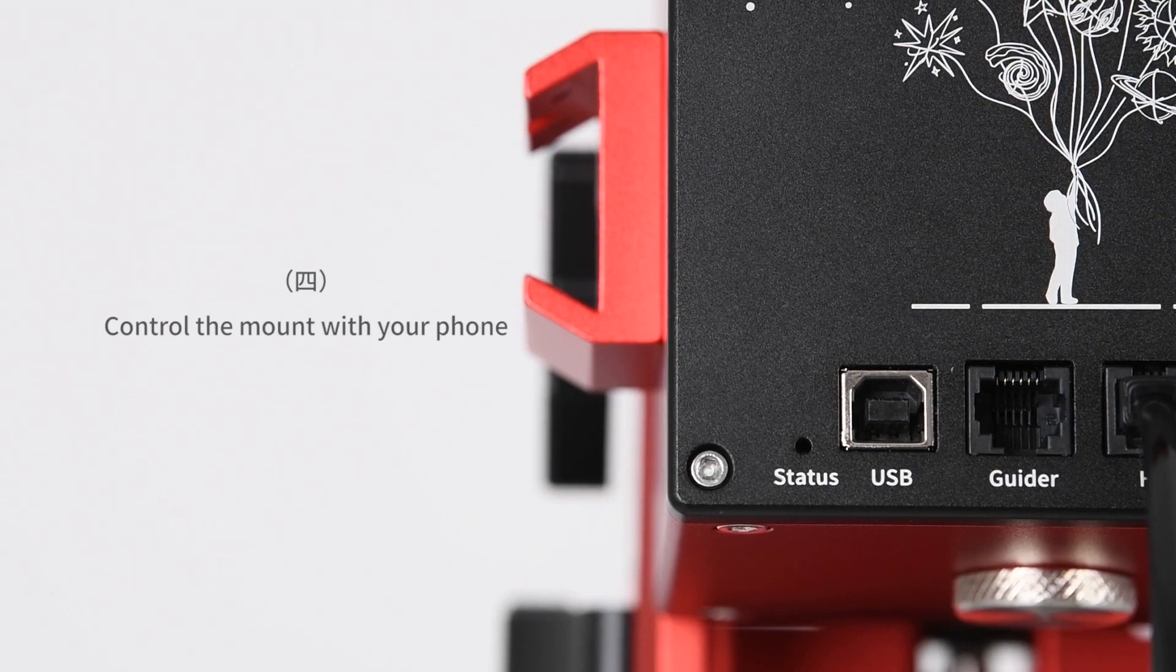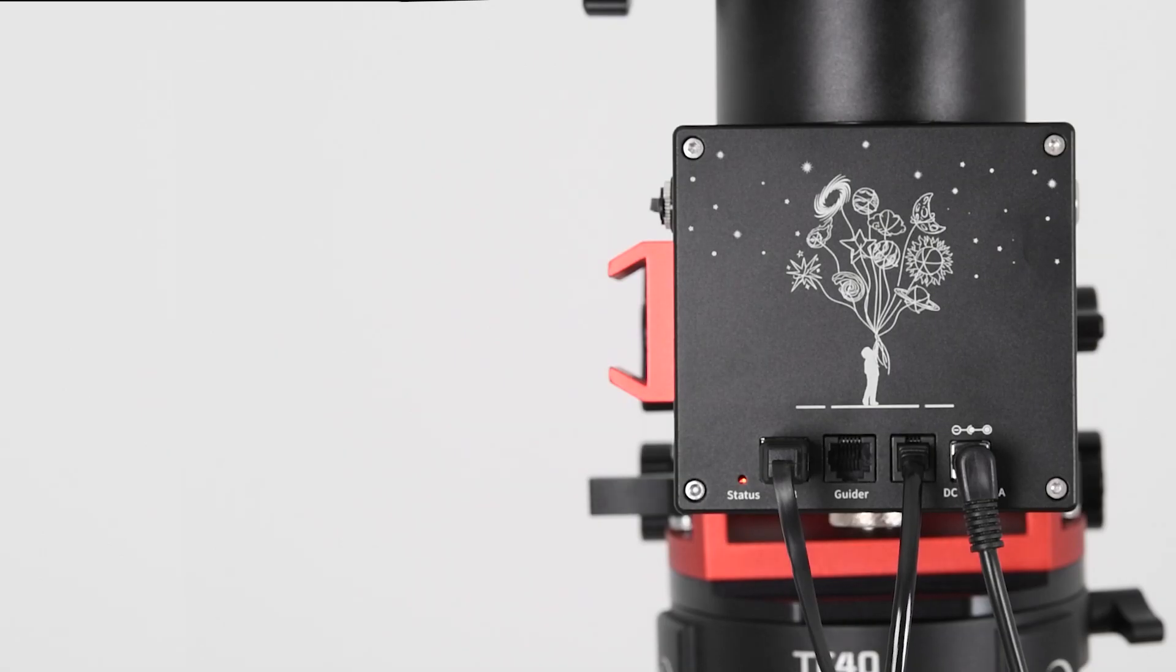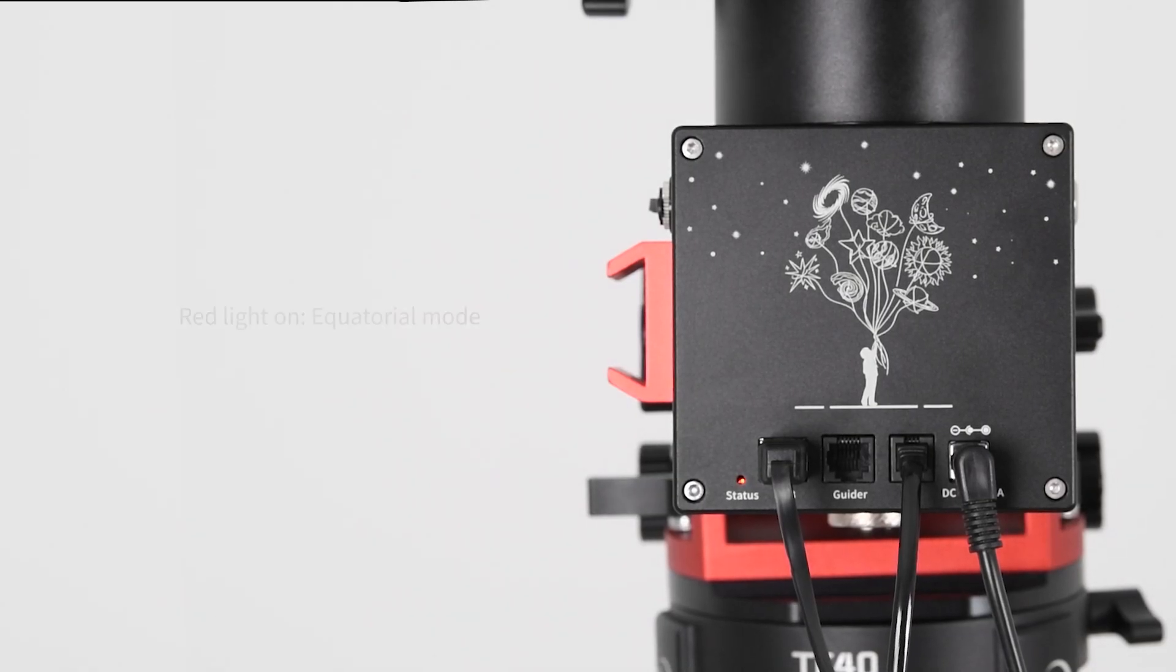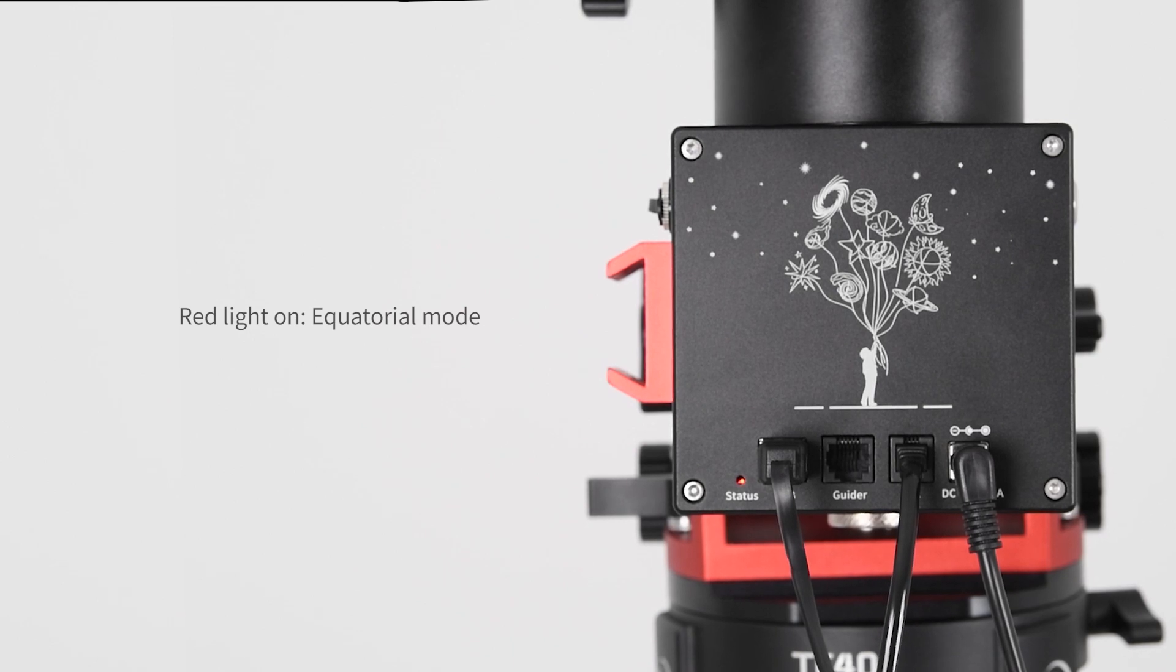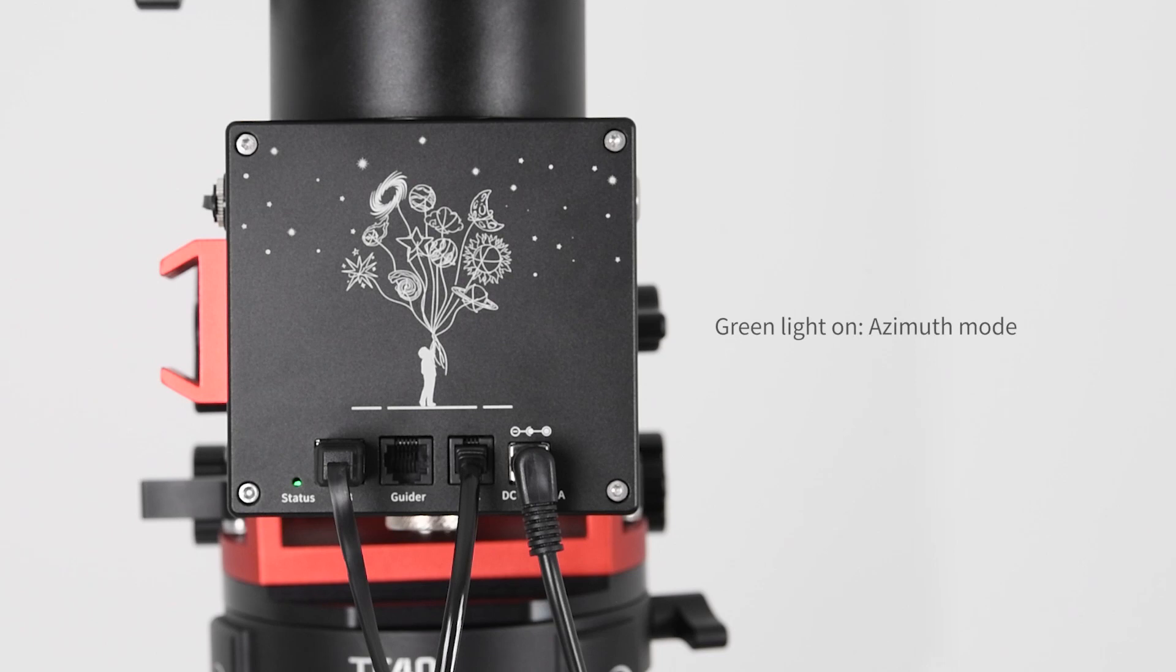Mobile app control. Inspect the light indicator after the mount is powered on. It is in equatorial mode if the indicator lights up red for the first five seconds. It is in azimuth mode if the indicator lights up green for the first five seconds.